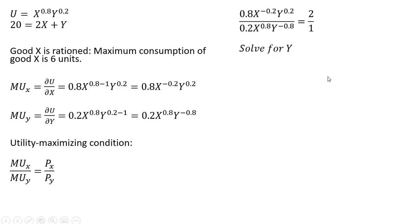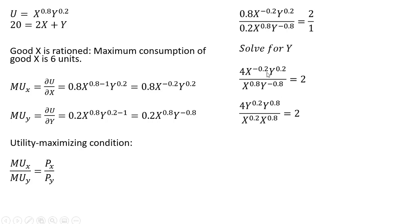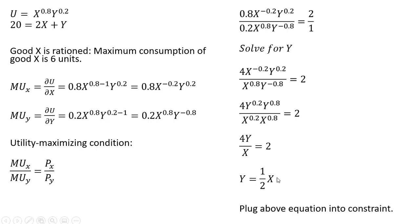We simplify and solve for Y. The 0.8 divided by 0.2 gives us 4, and 2 divided by 1 is just 2. We move the X to the −0.2 into the denominator, making the exponent positive 0.2, and we move Y to the −0.8 into the numerator, making that exponent positive. After combining exponents on the Y and X terms and dividing through by 4, we get Y equals one-half X. We'll take this result and plug it into the budget constraint on the next slide.